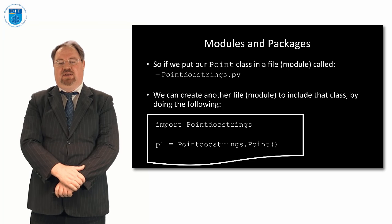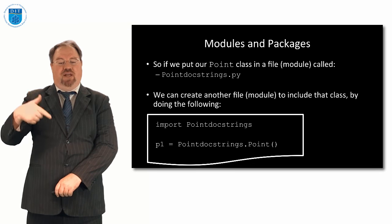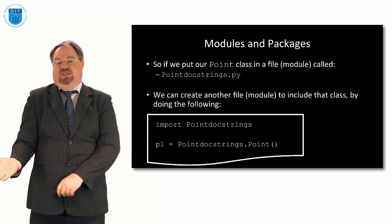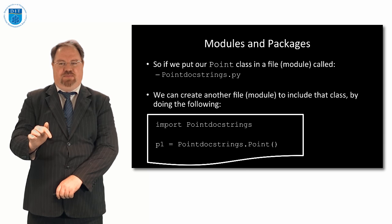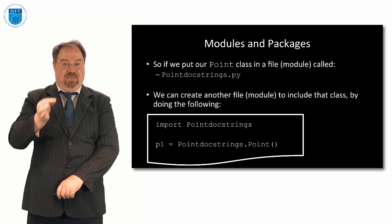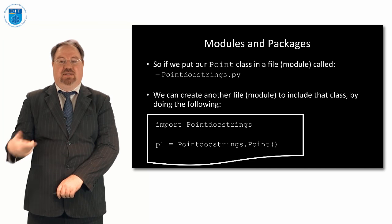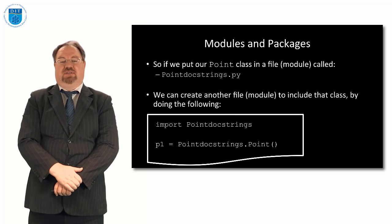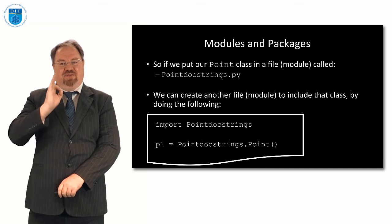So if I have a file or module called docstrings.py, and I want to call the methods, attributes or class from that file into another file, all I say is import docstrings. If the file is called banana and the class inside is called point, I say import banana — I'm importing the name of the file. What you're importing is the name of the file, not the name of the class.